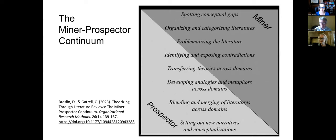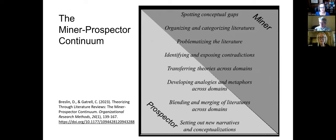Another classic miner approach would be organizing and categorizing literatures — where you review a literature and classify it according to, say, antecedents, process and outcomes, which is a very standardized approach in literature reviews. These approaches tend to be a little bit predictable in the sense that one could imagine an algorithm being able to do a similar sort of exercise. There is a contribution to knowledge there, but it's within the confines of a very clearly defined discipline.